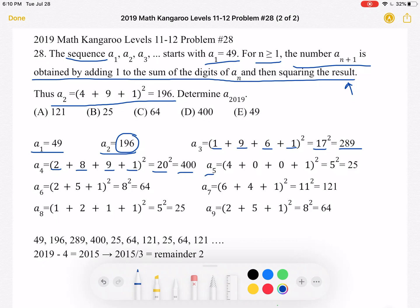Same with A5. A5 must be 4 plus 0 plus 0 plus 1 squared, which equals 5 squared, and that's 25.